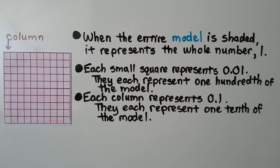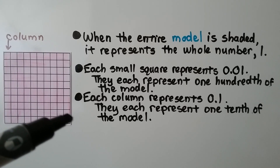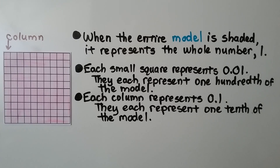When the entire model is shaded, it represents the whole number one. Each small square represents one-hundredth of the model, and each column represents one-tenth of the model.